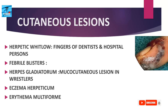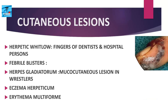HSV usually infects through abraded skin and causes various cutaneous lesions. Herpetic whitlow presents as lesions on the fingers of dentists and hospital personnel. Febrile blisters occur when fever from any cause reactivates HSV to produce recurrent blisters. Herpetic gladiatorum consists of mucocutaneous lesions on the body of wrestlers. Other lesions include eczema herpeticum and erythema multiforme.